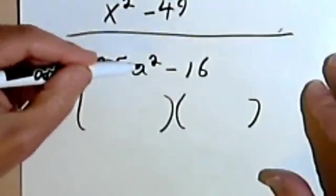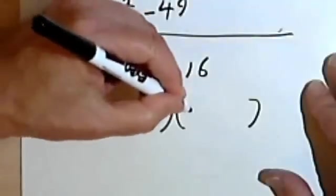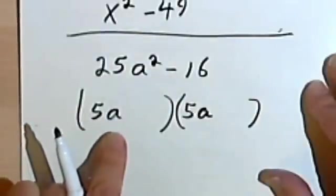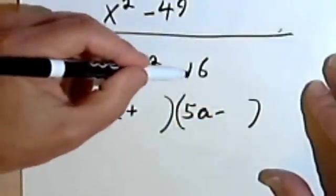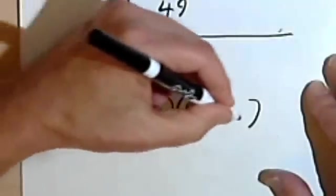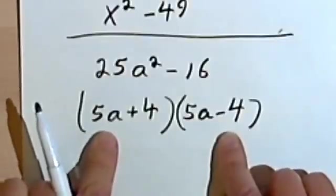So really all we have to do is put in our parentheses, take the square root of the first term, which is 5a, make that the first term of each of our binomials, put in one positive sign, one negative sign, and then take the square root of the second term, which is 4. The square root of 16 is 4. And this is going to be our answer.